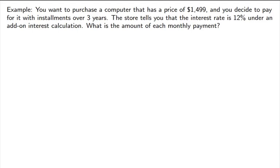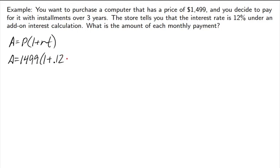Since add-on interest uses the simple interest formula, we apply the formula for the total repayment amount. P is the original $1,499, R is 0.12 for 12% interest, and T is three years. Computing this, the repayment amount after the simple interest is applied is $2,038.64 — that's how much we have to pay back.